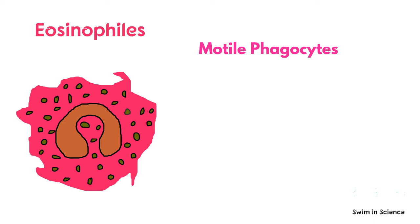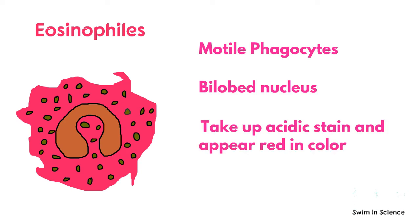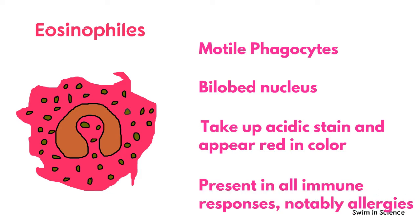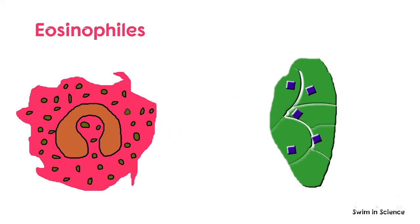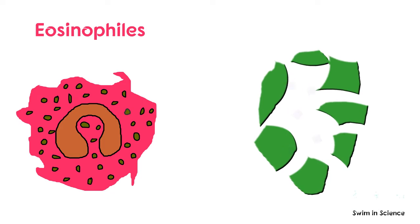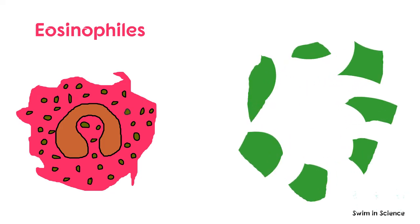Eosinophils are weak phagocytes. They have a bi-lobed nucleus. They take up the acidic stain eosin and appear red in color. Eosinophils are present in almost all immune responses, most notably allergies. However, they also fight off parasites by secreting membrane-damaging granules.